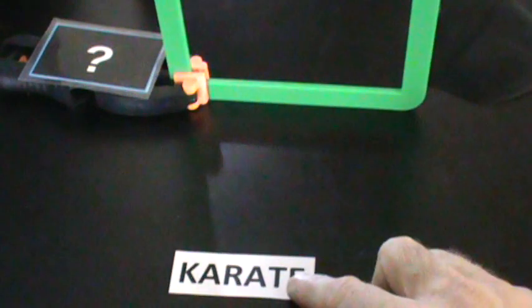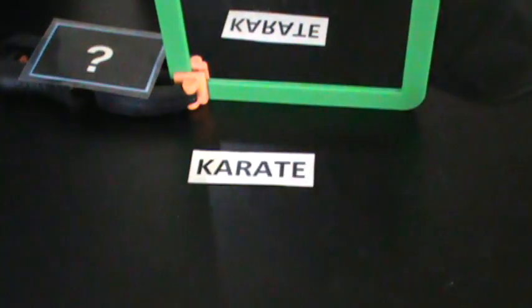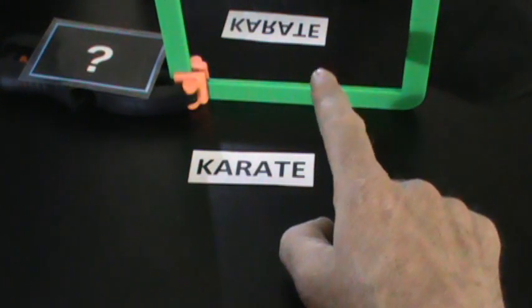Welcome to Mirrored Reality number four. Today we're looking at the word karate. Now if you move that towards the mirror, you can see the reflection, and in the reflection it gets flipped, the word karate.